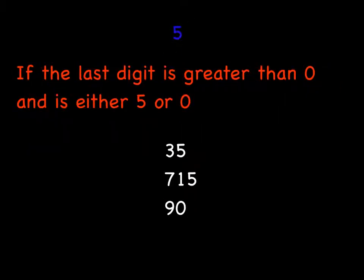Now we're back to an easy one, five. If the last digit is greater than zero, because zero is not a factor of five, if it is greater than zero and it is either five or zero itself, that last digit, here they are, five, five, and zero, then all of these numbers have five as a factor. 35, 715, 90.